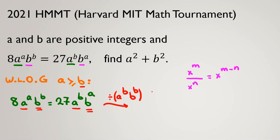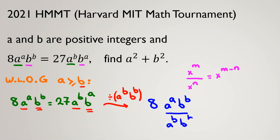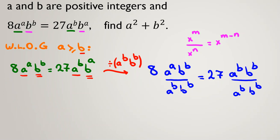I divide both sides by the smaller power: since b is smaller, I divide by b to the b. Let's write: 8 times a to the a times b to the b over a to the b times b to the b, equals 27 times a to the b times b to the a over a to the b times b to the b. Here we can cancel b to the b, and also cancel a to the b on both sides, leaving the simplified expressions.